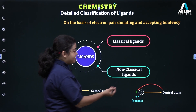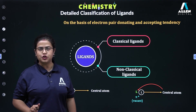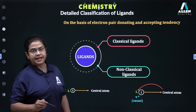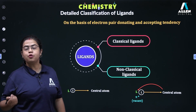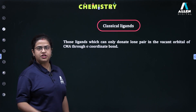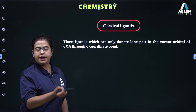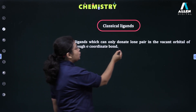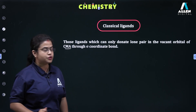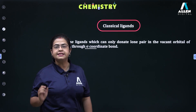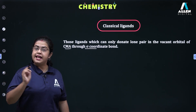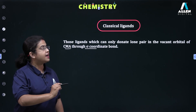Here we come across the fact that a ligand can show another kind of behavior where it can behave as an electron pair acceptor as well. The important condition for its accepting behavior is that it should have some vacant orbitals to accommodate electrons from the central metal atom or ion. Classical ligands are the ones which have just one job — they behave only as electron pair donors, forming sigma-type coordinate bonds.